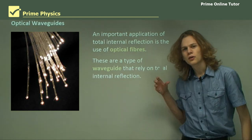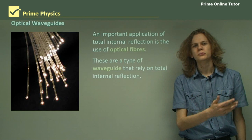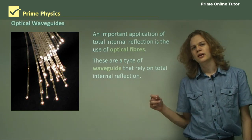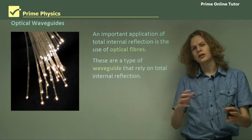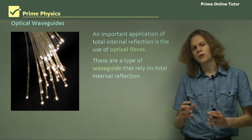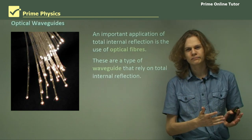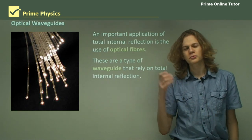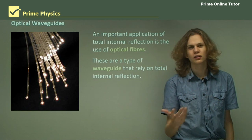So light can pass through this pipe or this waveguide and inside it be reflected as the pipe goes around things like corners. The pipe doesn't have to be perfectly straight — it can bend if it likes.